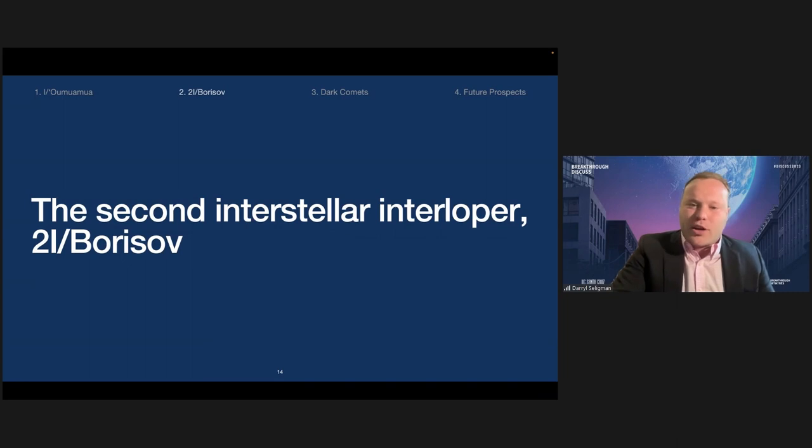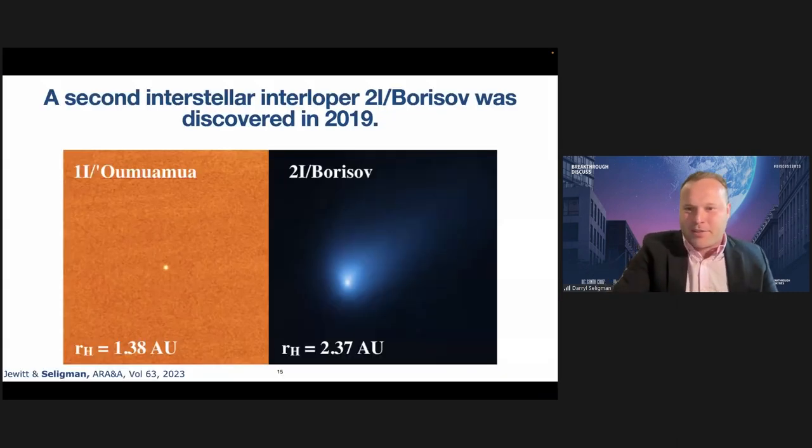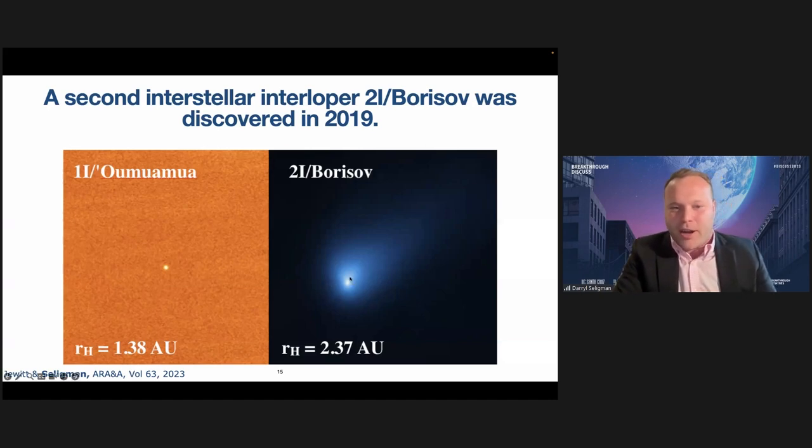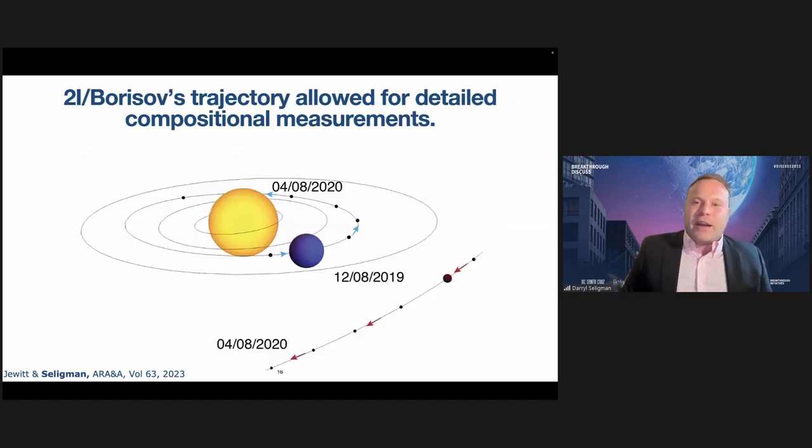The second interstellar comet was discovered, 2I/Borisov, just two years after 'Oumuamua. This is one of Dave's images taken with the Hubble Space Telescope of Borisov on the right. It's quite a stark contrast to 'Oumuamua. You can see that this image of Borisov clearly is a different regime of object. You have this very extended cometary tail. The great thing about Borisov was that it was discovered, I'm showing you where it was discovered here on the right, and it was observable from Earth for almost a year. So we had almost a year to get very detailed compositional measurements and dust measurements that told us about how Borisov was acting in comparison to solar system comets. It turns out that Borisov is quite different than a lot of the solar system comets that we have measured. It's been very interesting and told us a lot about planet formation. But clearly, this object is different than 'Oumuamua, which acted very mysteriously.